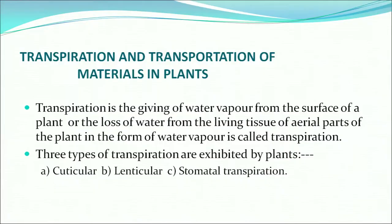Transpiration is the loss of water vapor from the surface of a plant — specifically the loss of water from the living tissue of aerial parts of the plant in the form of water vapor. Three types of transpiration: cuticular transpiration, lenticular transpiration, and stomatal transpiration.